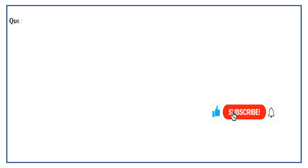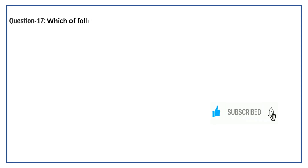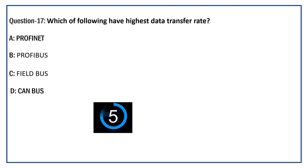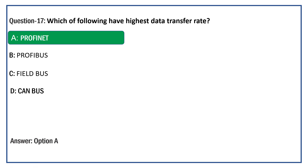Which of the following has the highest data transfer rate? Option A: ProfiNet. Option B: ProfiBus. Option C: FieldBus. Option D: CanBus. The right answer is Option A: ProfiNet.